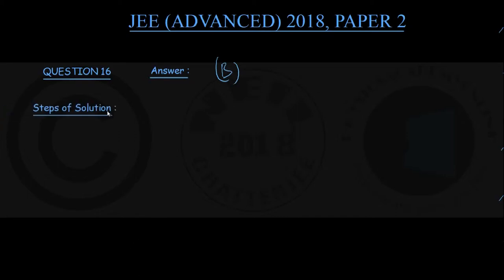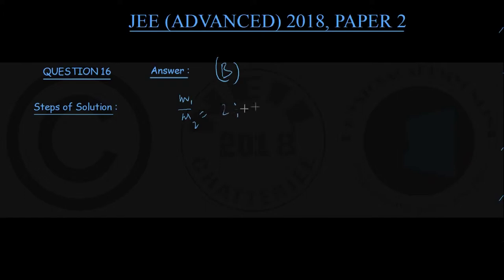For question number 16, the correct option is B. To show you the steps of solution, let us first note down for the two satellites of a planet: their mass ratio M1 upon M2 is given to be 2, and orbital radii are in the ratio R1 by R2 equal to 1 by 4.